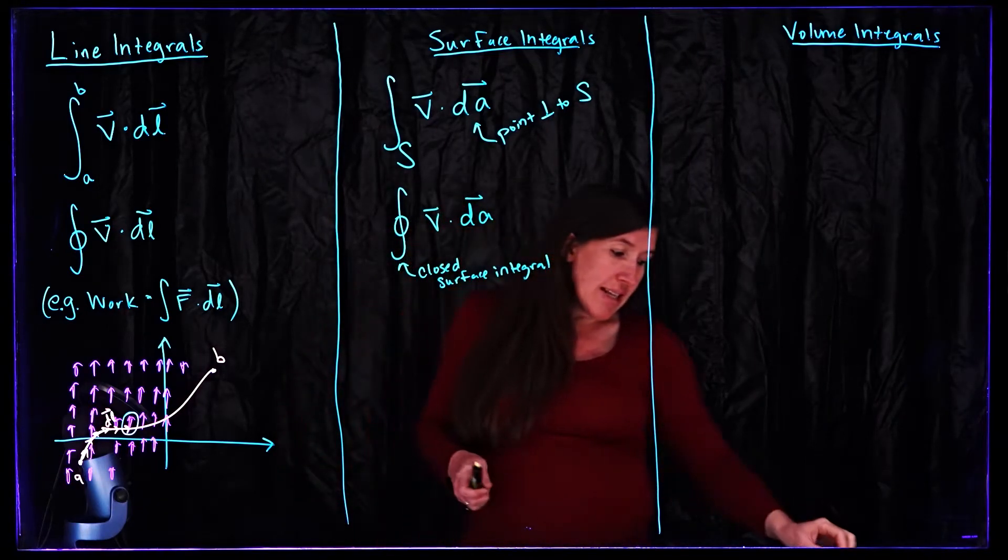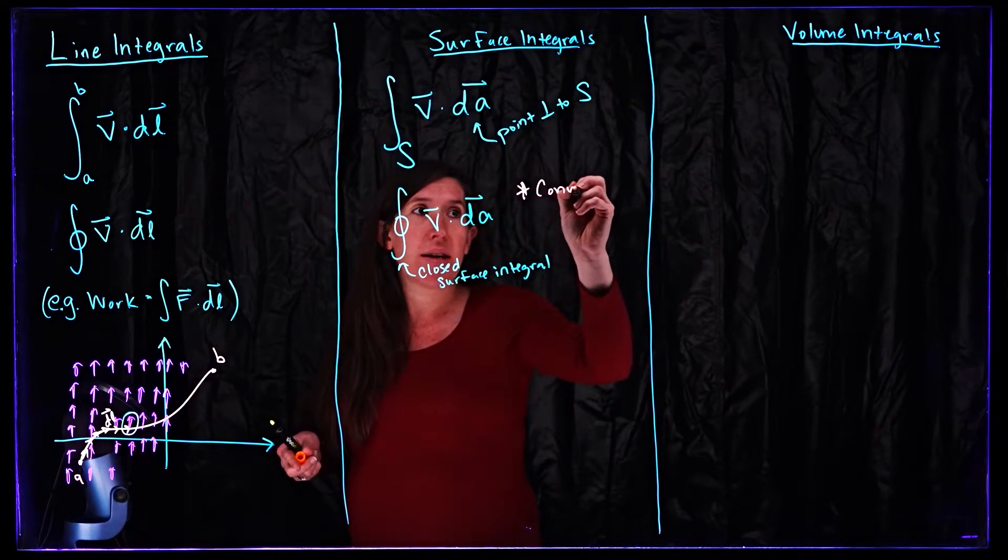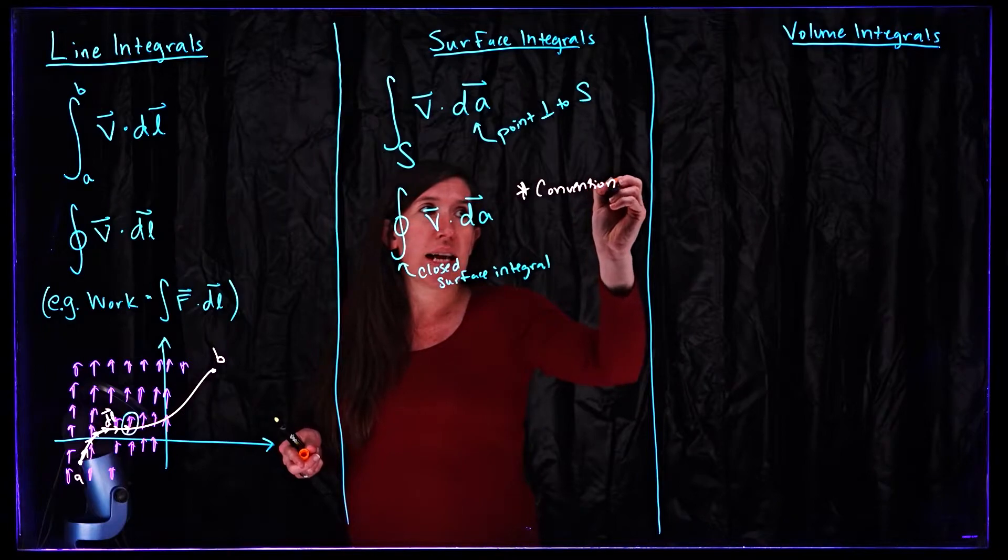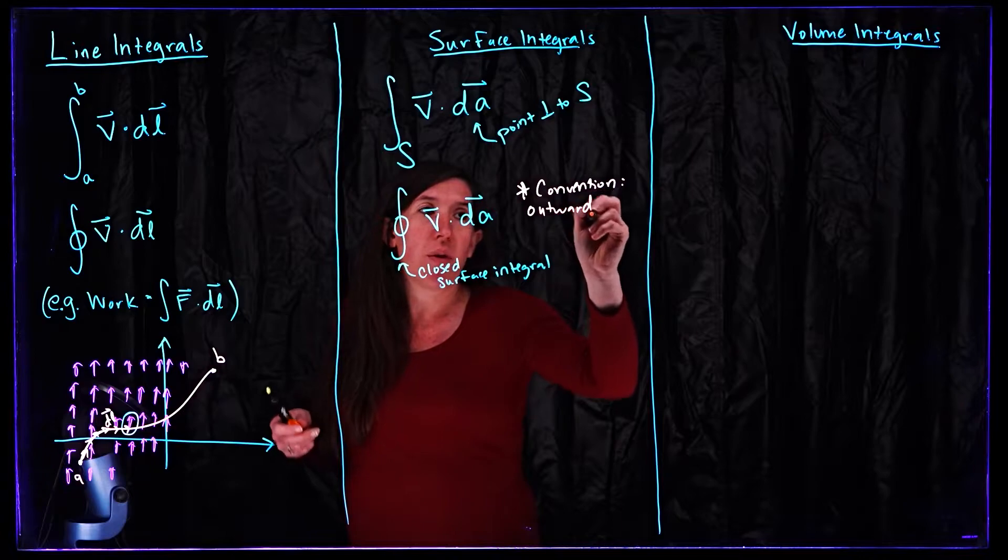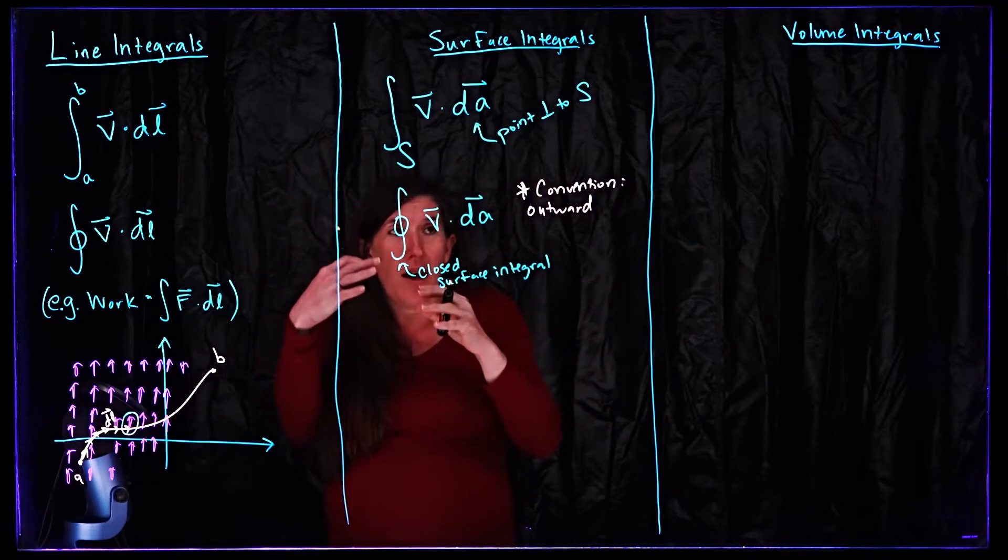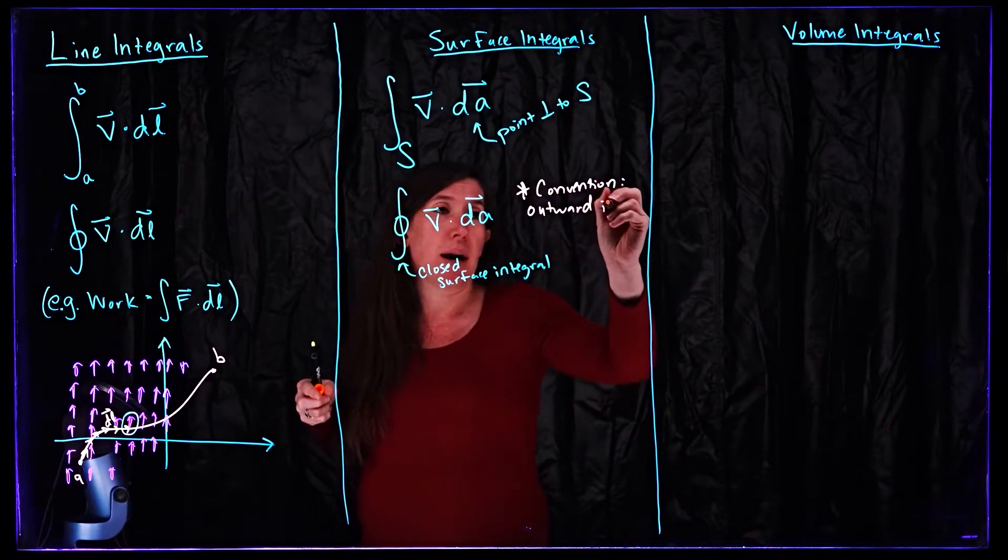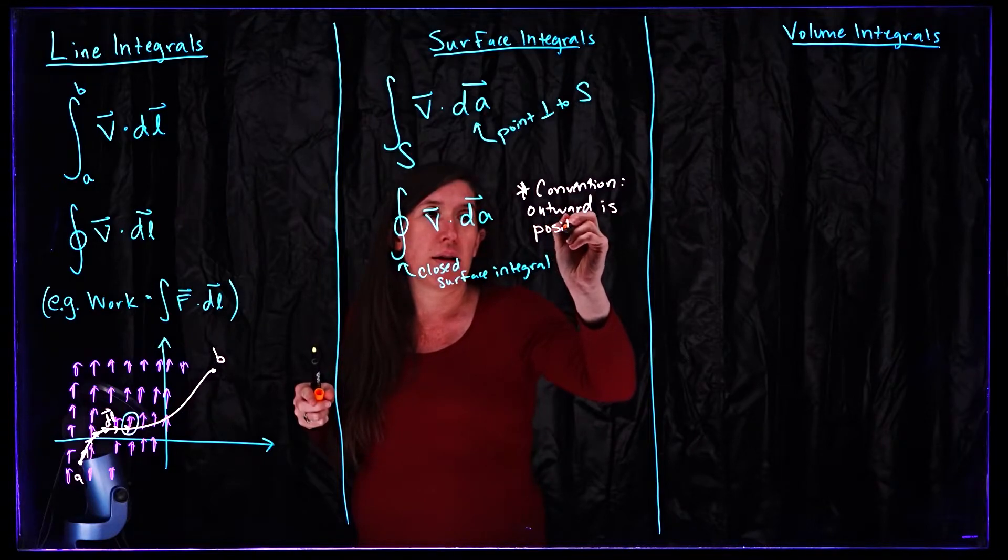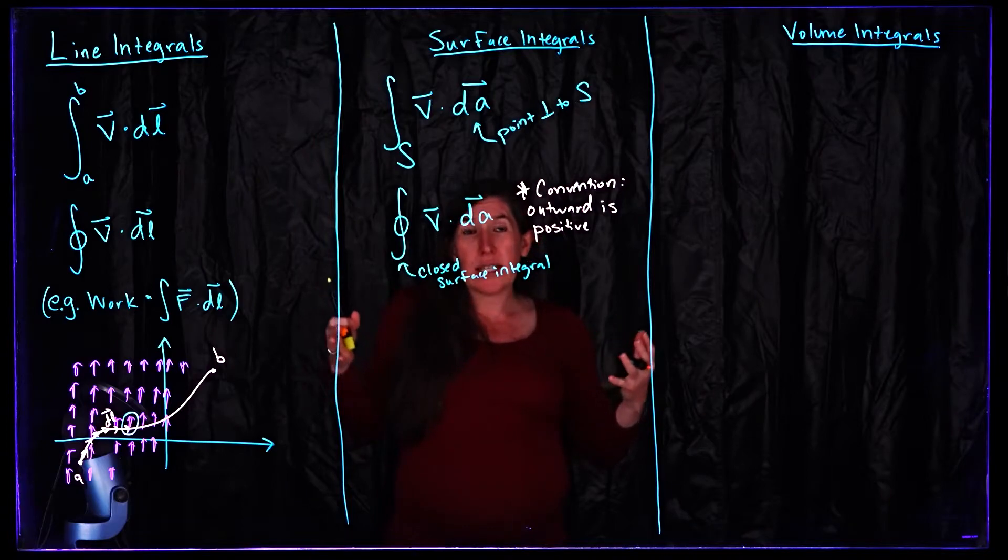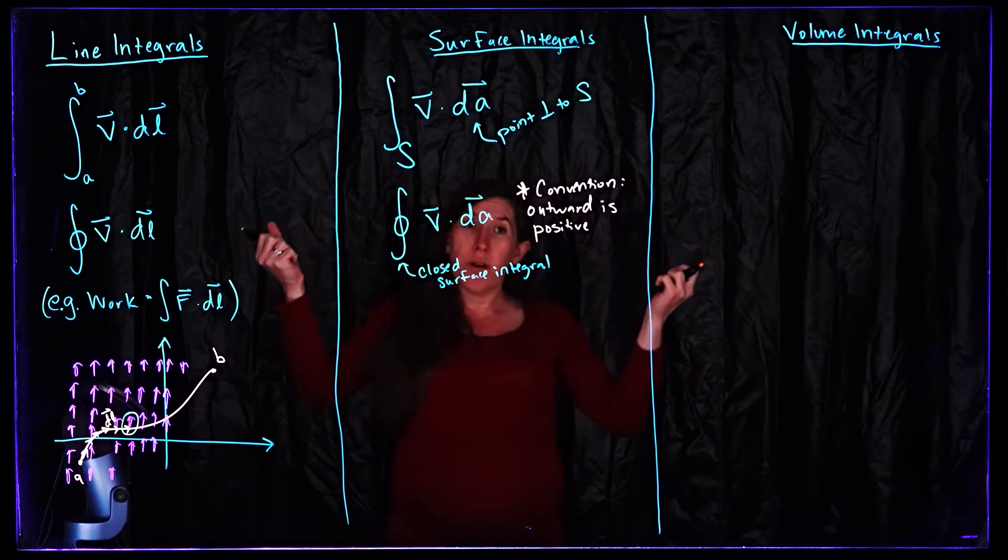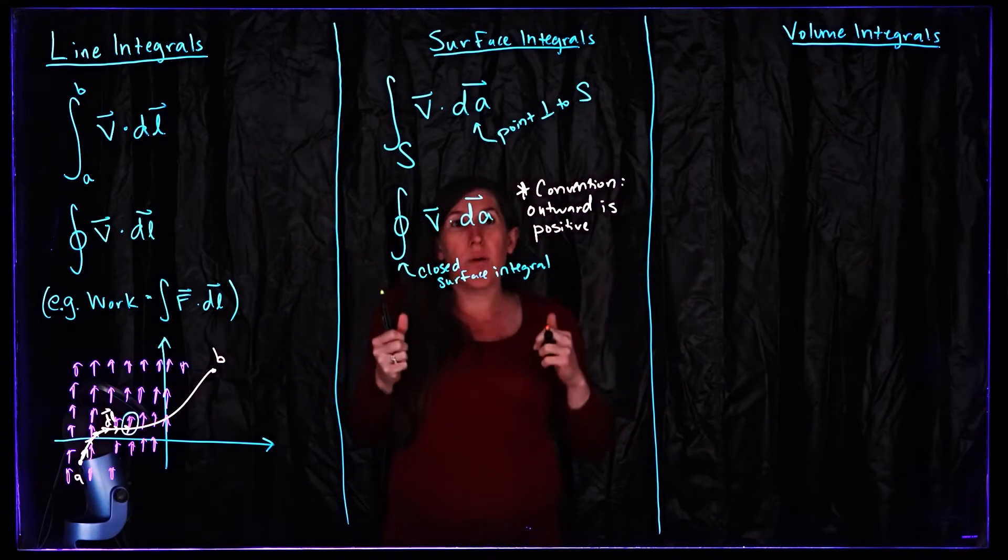In this particular case there is a convention. So here the convention which is standard is that outward, so if we have a closed surface you're imagining like a sphere, if we have the sphere as our surface then going out from the sphere is the positive direction. When it's a closed surface then there's a clear distinction between things moving outward from the closed surface or into the closed surface and the convention is that we'll take outward to be positive.